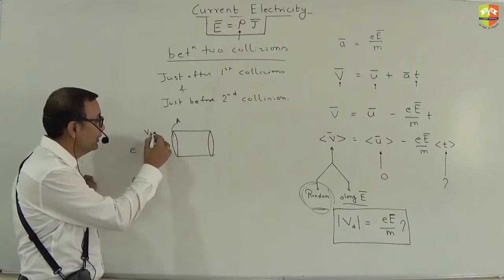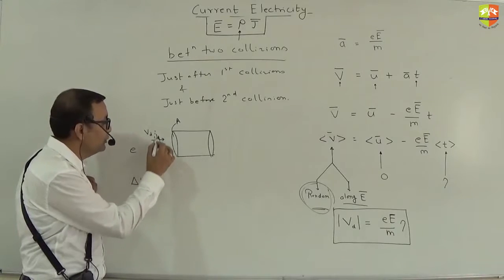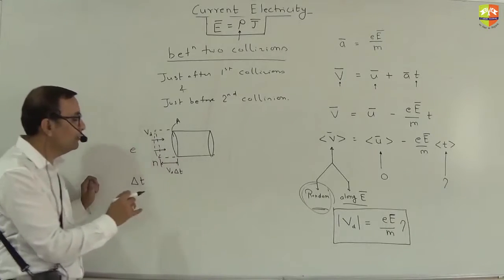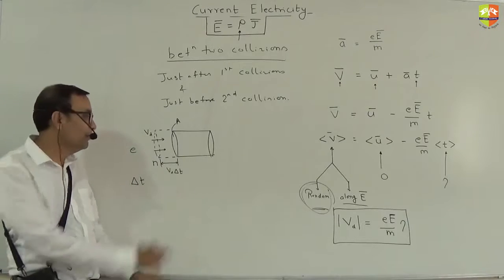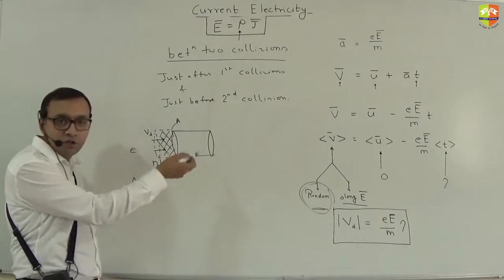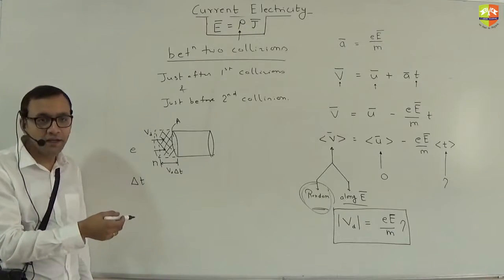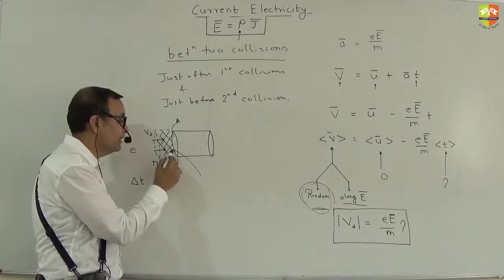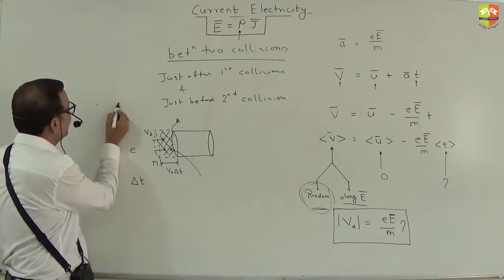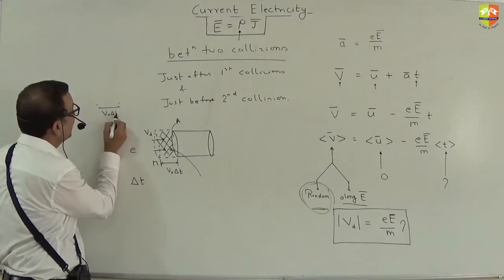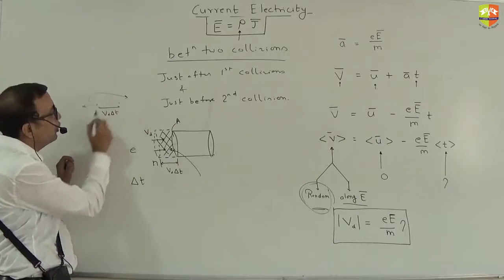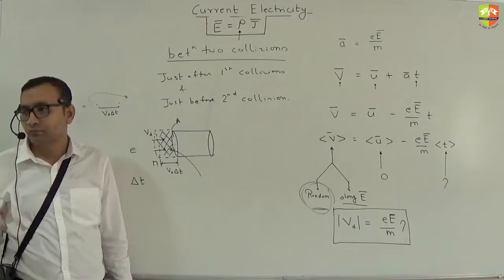Assume there is an electron at a distance of v_d × δt. In δt time it can just barely reach the cross-section. So only free electrons in the shaded zone will cross the area. Any electron beyond a distance of v_d × δt will not be able to cross in δt time.